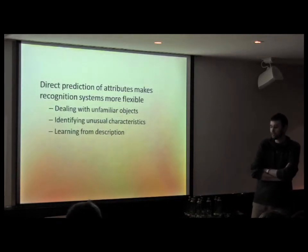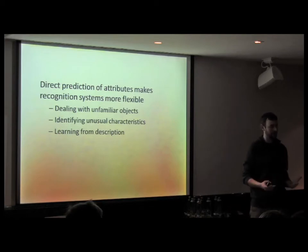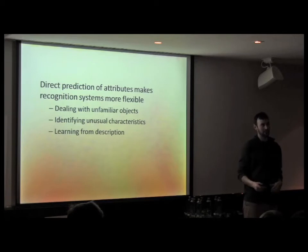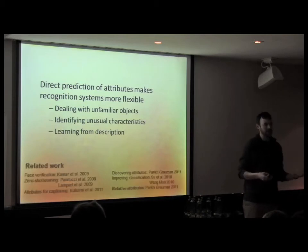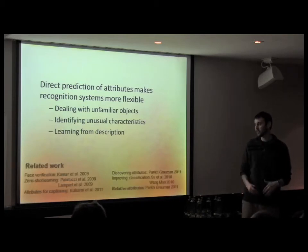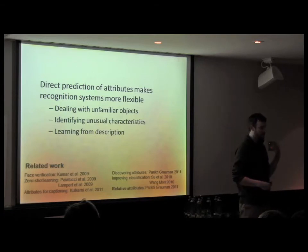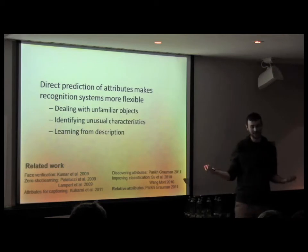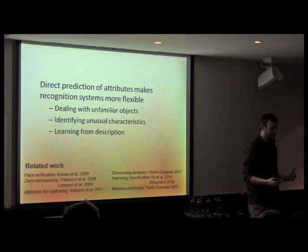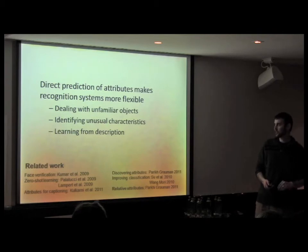From this work, a couple of conclusions: attribute prediction gives us more flexible recognition systems — the ability to deal with unfamiliar objects to some extent, to provide more information about familiar objects, and to potentially learn from description. There's a lot of related work on attributes; one highlight is recent work by Parkey and Grauman on relative attributes, where a tennis ball is more furry than a baseball but less furry than a cat. These relative attributes lead to much more accurate descriptions and better zero-shot learning.